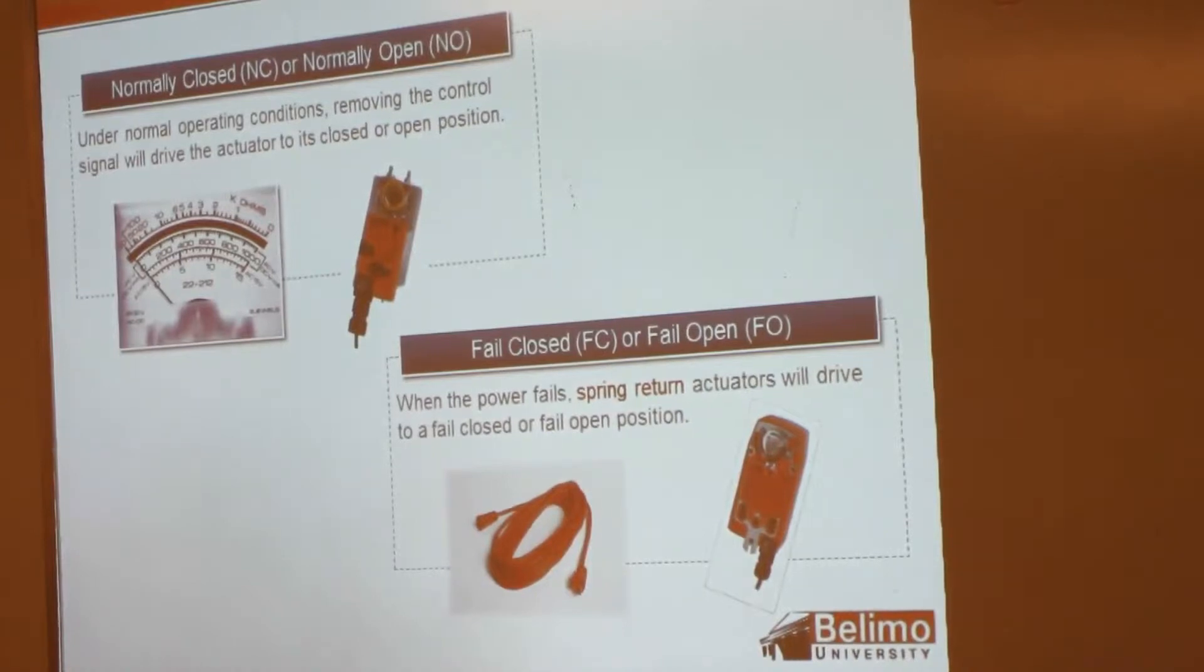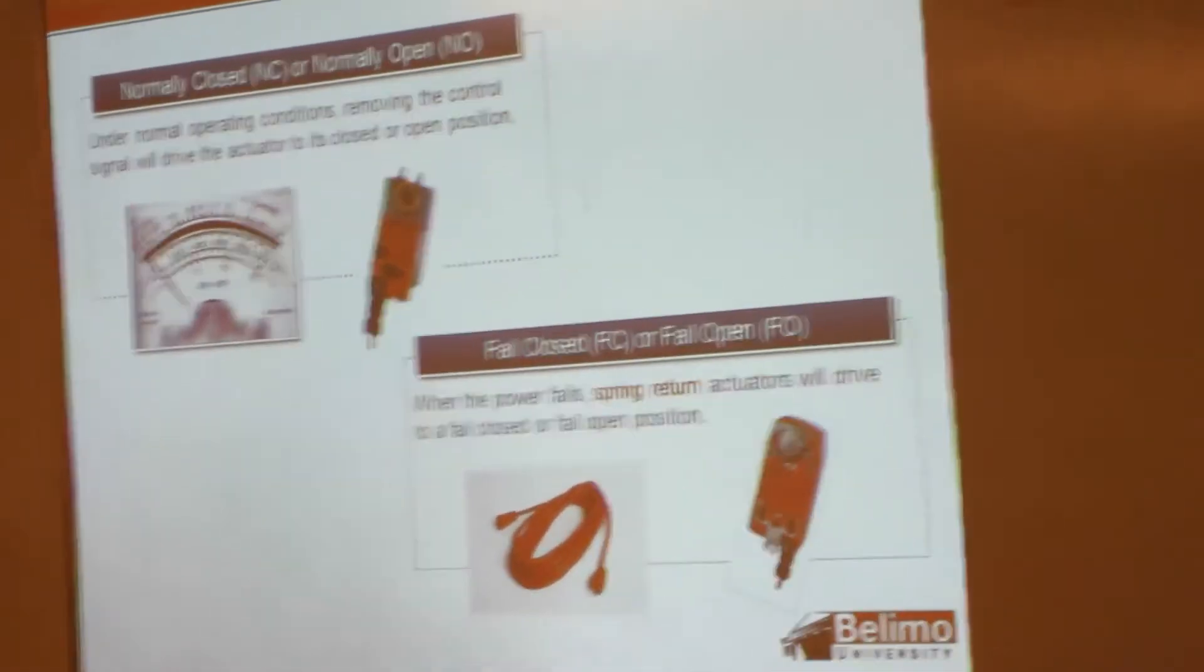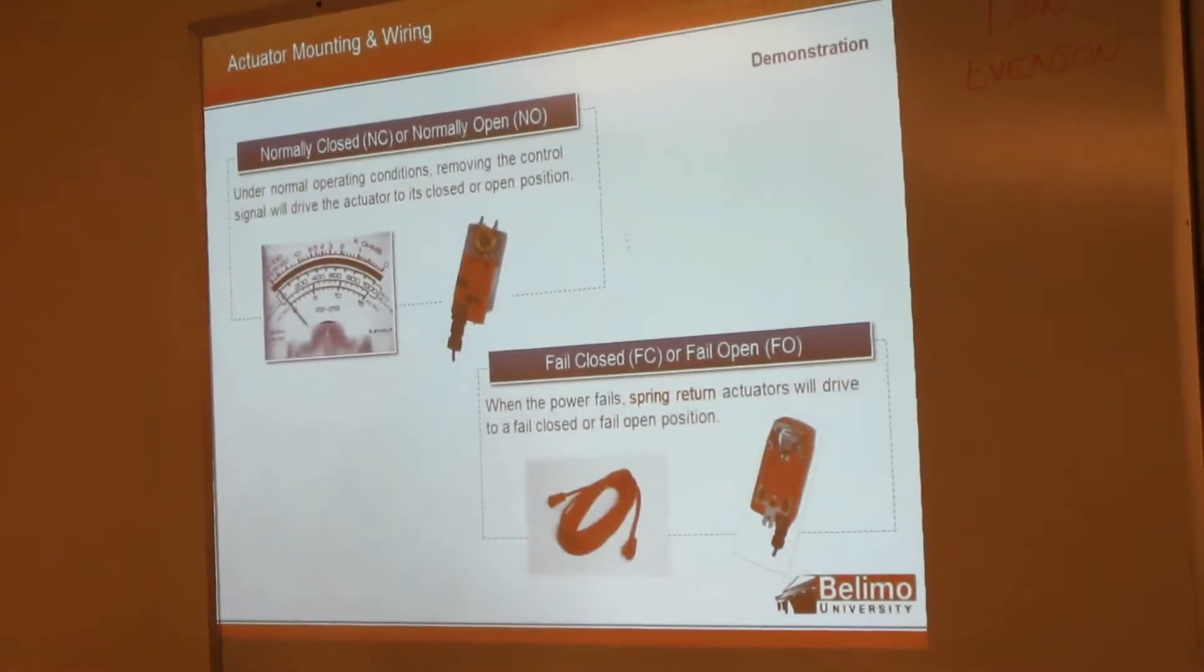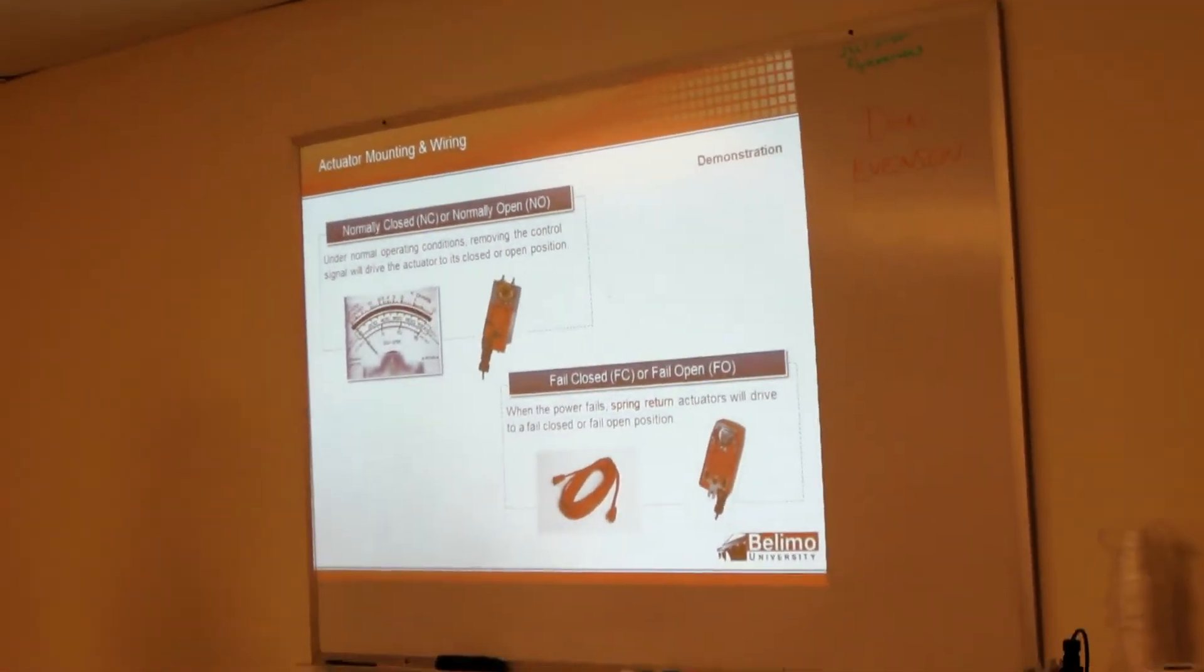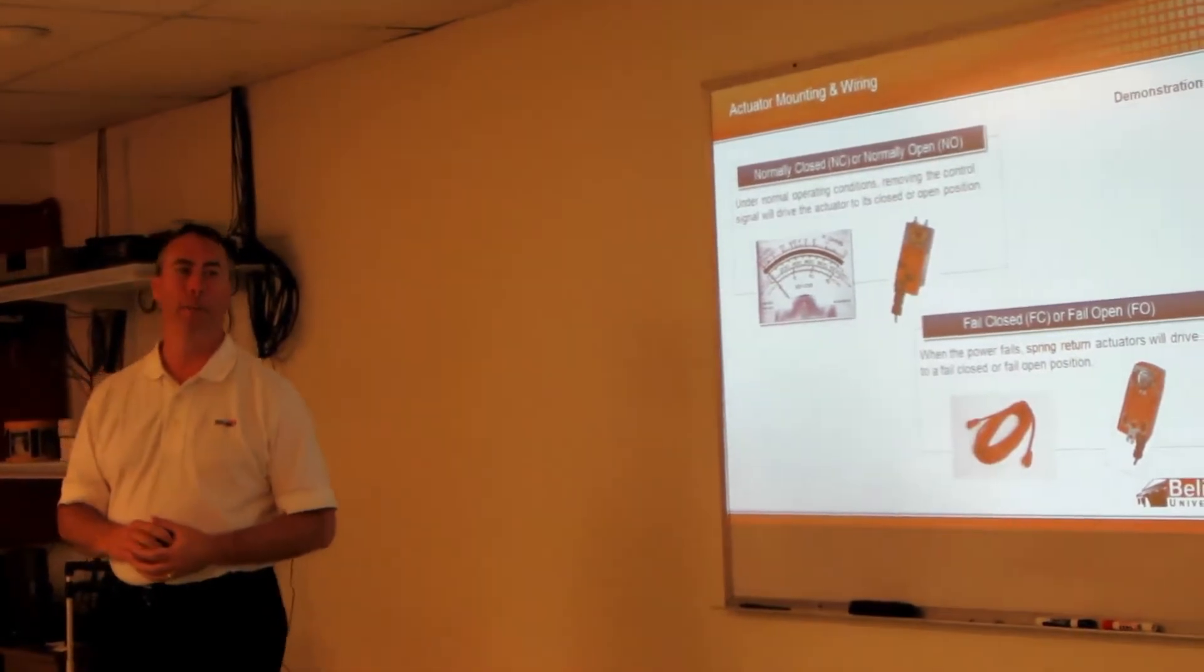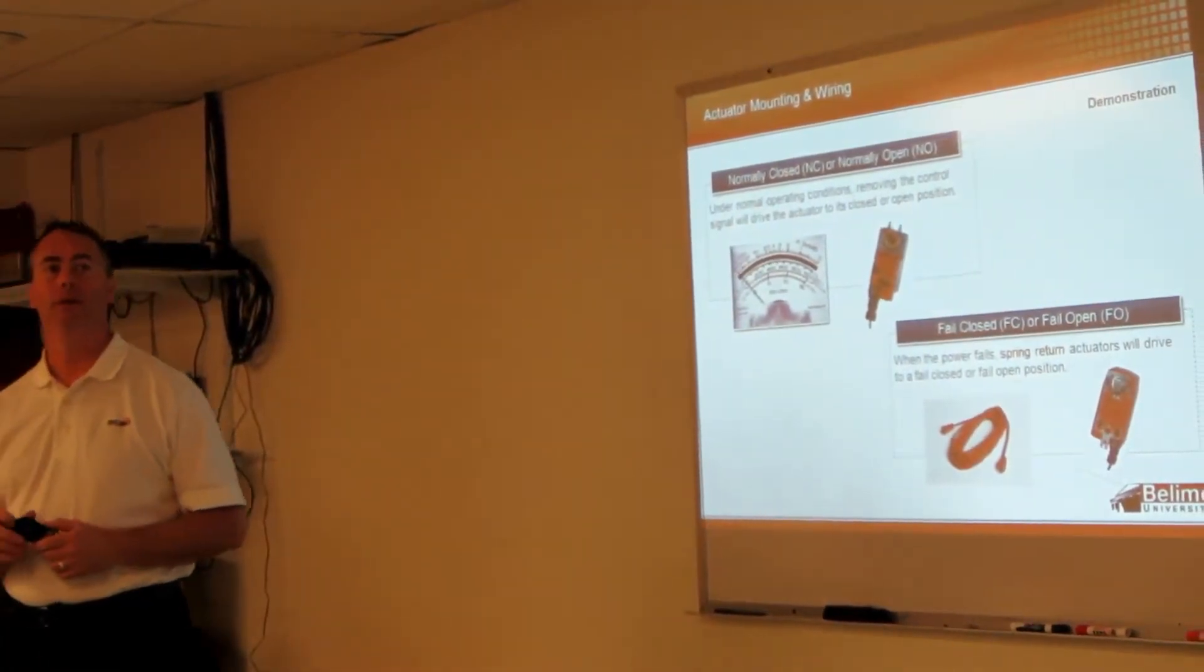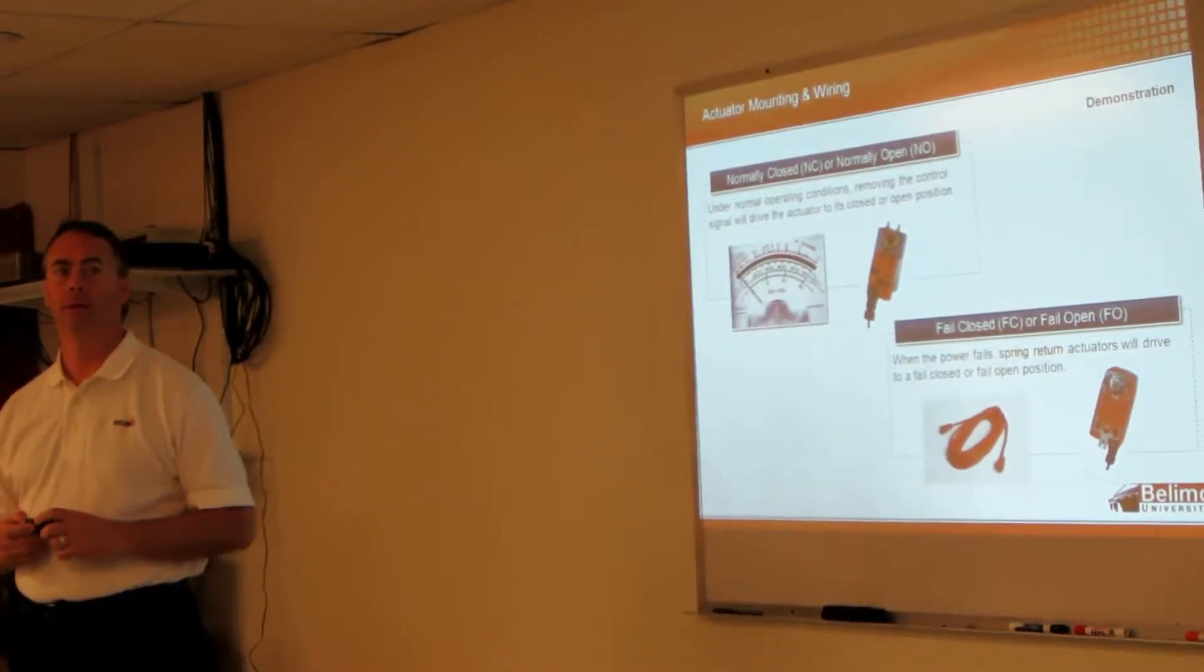Now we're going to talk about normal position and fail position, which the agenda showed earlier was going to be in a previous section. Before we get to this section though, what would happen on this actuator if you take your white wire and put it into your red wire, your 2 to 10 and put it into 24? What's it going to do?